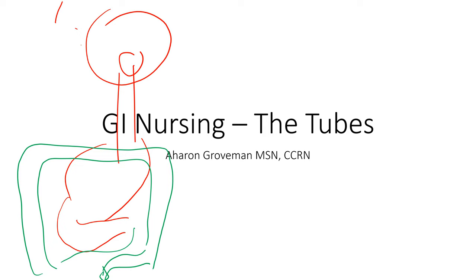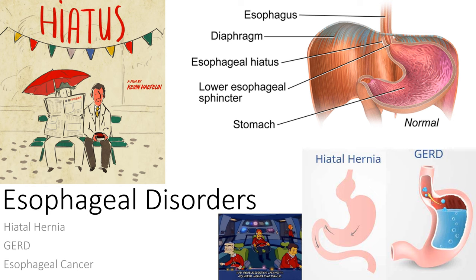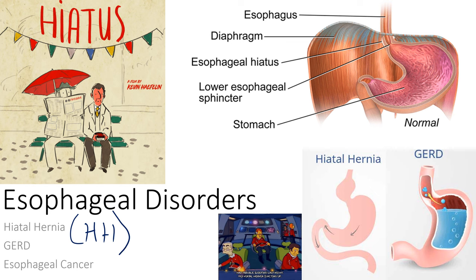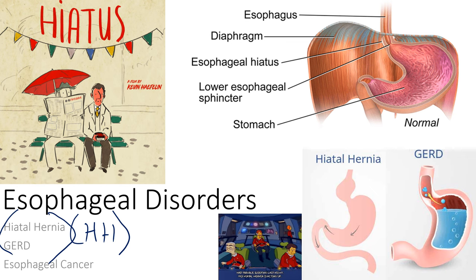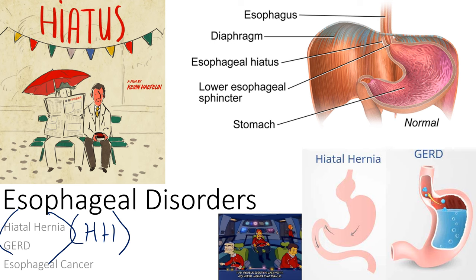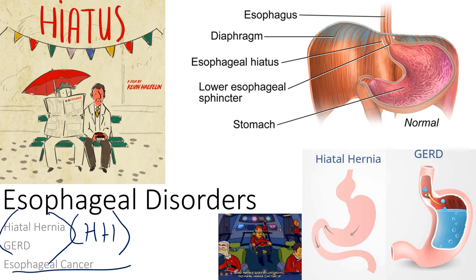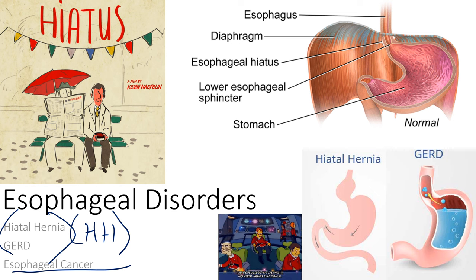First we're talking about the esophagus. Esophageal disorders include hiatal hernia, GERD — which stands for gastroesophageal reflux disease — and there's a lot of overlap between the two. At the end of each section we'll talk about the related cancer: esophageal cancer, then gastric cancer, then colon cancer.